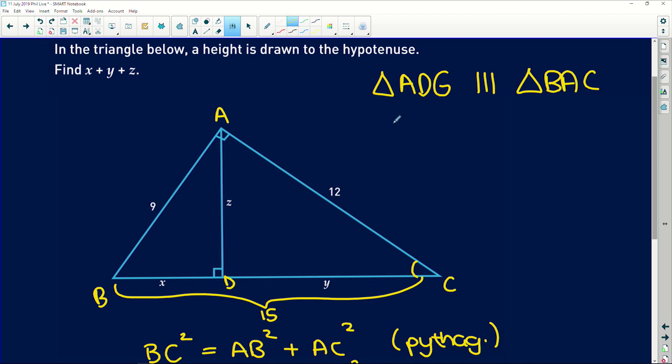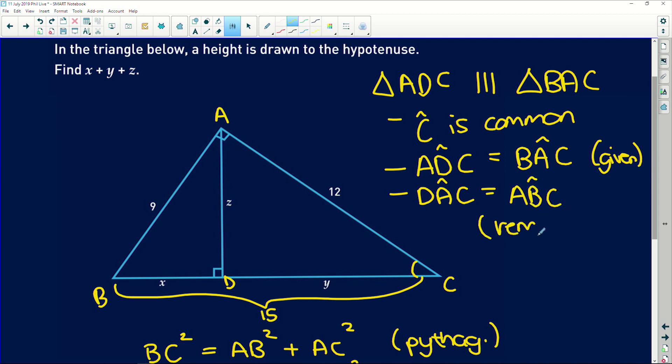Why? Because angle C is common. Let me just write this out. Angle C is common. Angle ADC, let's work in this triangle first. Angle ADC, this is meant to be C over here. ADC is equal to BAC because they're both 90 degrees, so given. And then obviously the last angle will be common. So DAC is equal to ABC, not common, remaining angle.